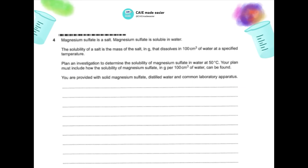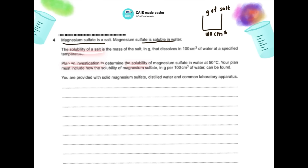Now let's start with the latest question from May/June 2025. Magnesium sulfate is a soluble salt. The solubility of a salt is the mass in grams that dissolves in 100 cm³ of water. You are supposed to plan an investigation to determine the solubility of magnesium sulfate in water at 50°C. You need to find how the solubility of magnesium sulfate in grams per 100 cm³ of water can be found.